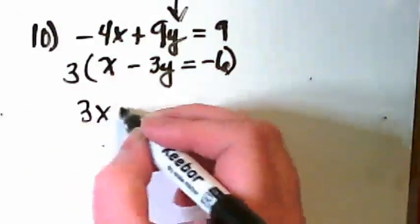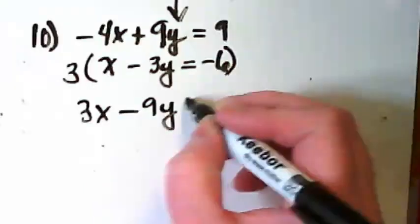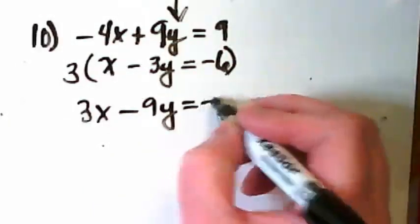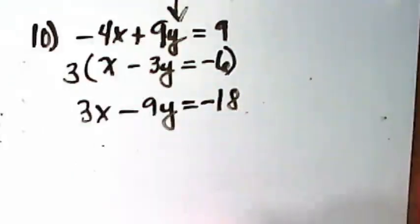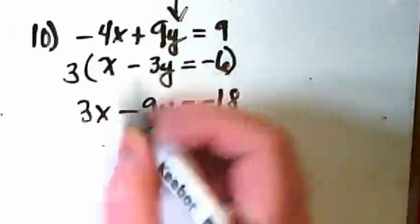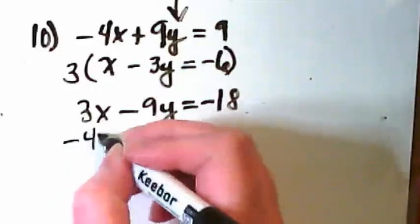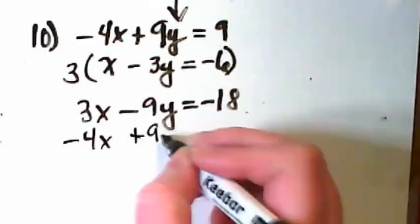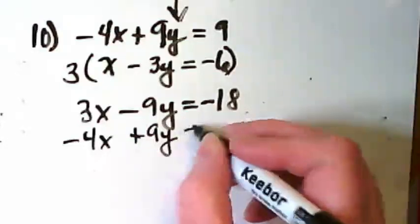That's going to get me 3x minus 9y equals negative 18. I'm going to bring the first equation down to put it underneath it so that I can put them together and eliminate.